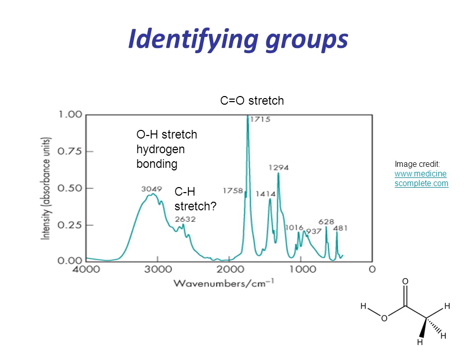Note that, in general, we would combine IR with other methods such as NMR and mass spec, when trying to identify the structure of an unknown molecule.